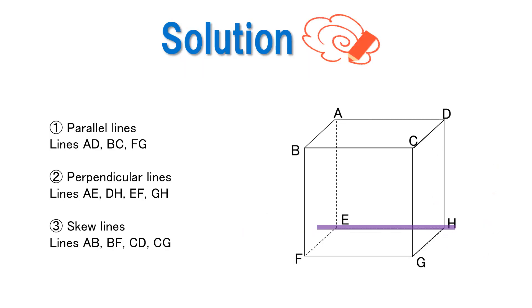Now let's check our answers. The parallel lines are lines AD, BC, and FG. The perpendicular lines are lines AE, TH, EF, and GH. The skew lines are lines AB, BF, CD, and CG. Were you able to answer correctly?